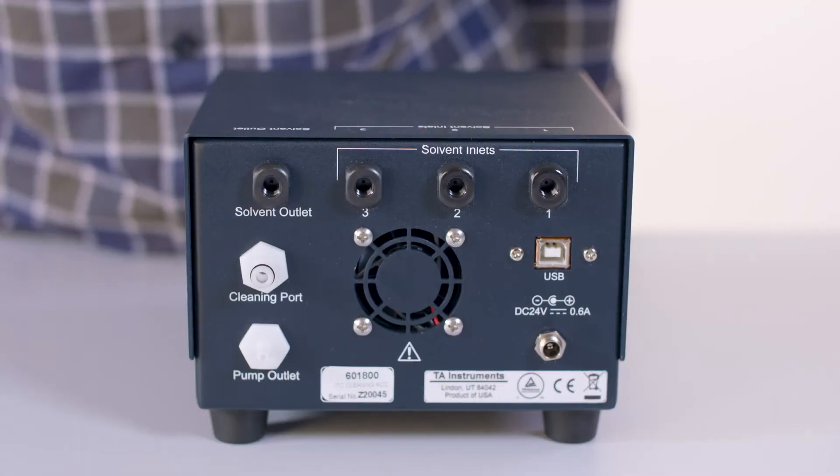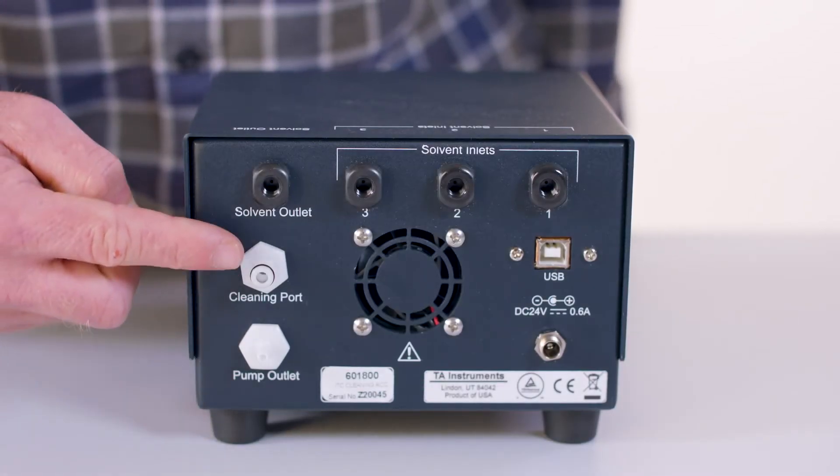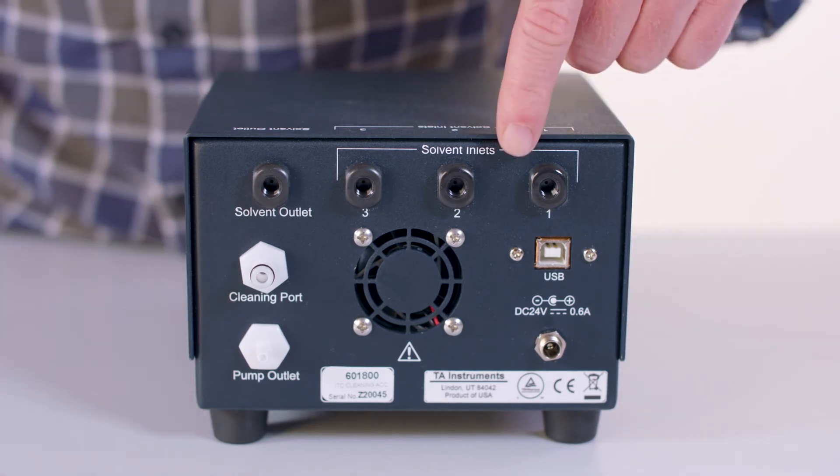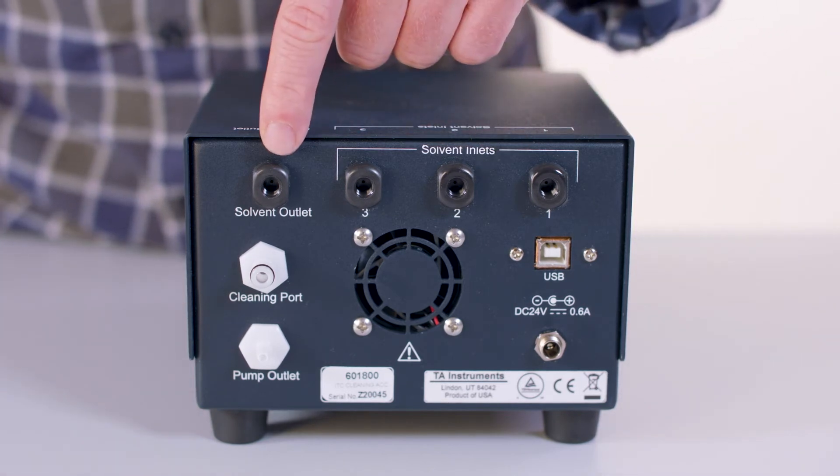In the back of the cleaning station, we will see a pump outlet, a cleaning port, three solvent inlets, and a solvent outlet that will pump water through the instrument.